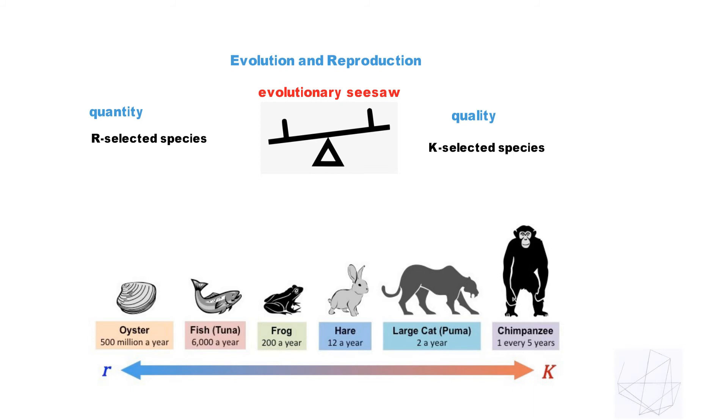K-selected species live closer to carrying capacity, have longer gestation periods, higher birth weight, delayed sexual maturation, lower sex drive, and longer lives.